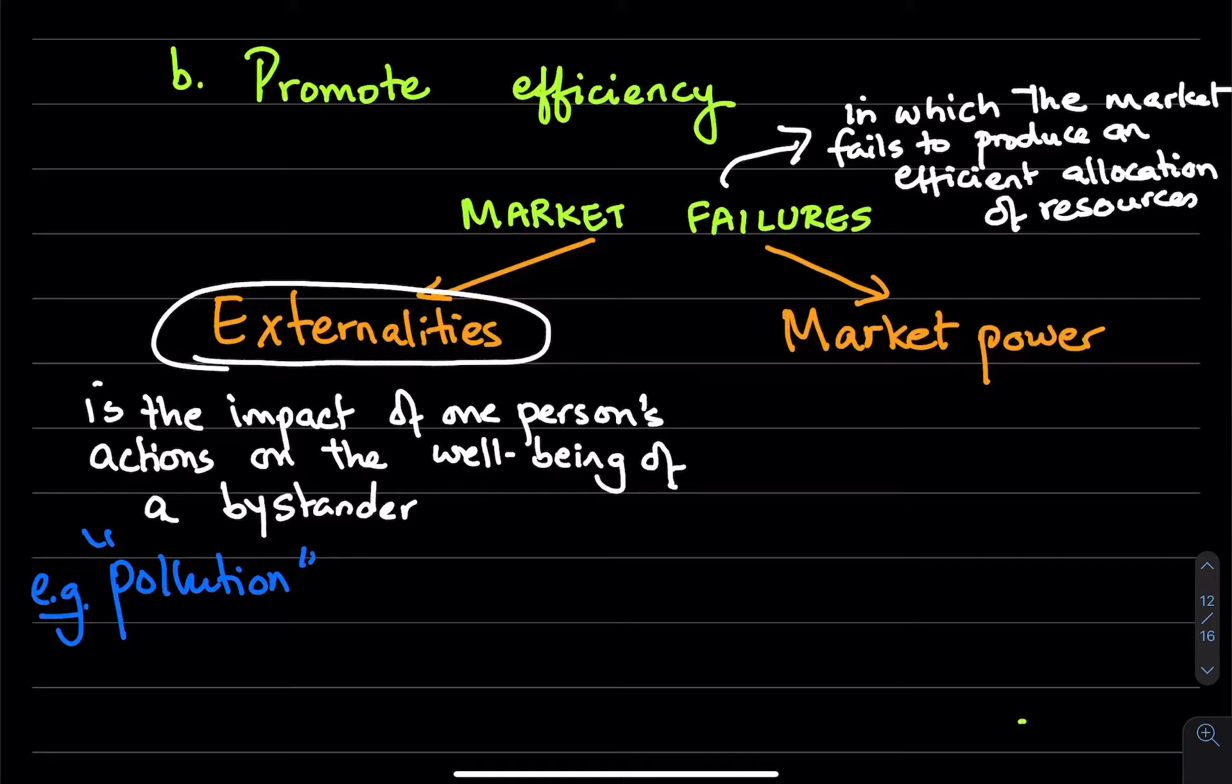So a factory may continue producing whatever good they are producing and cause more air pollution. So we really need the government to step in and do something about it. So one way they can control pollution is by levying a tax or having a pollution tax, which can raise the cost of production and disincentivize firms from producing more of those goods.